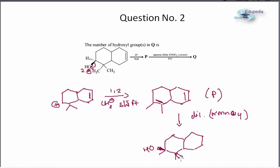And in a similar way there will be 2 OH groups at this side. Both the alkenes will be syn dihydroxylated.